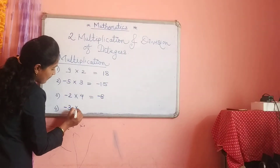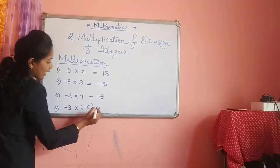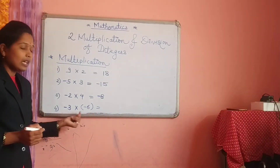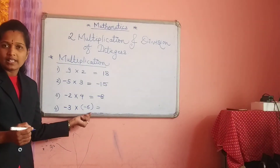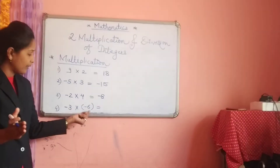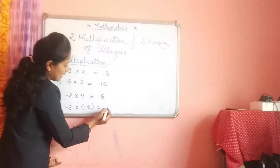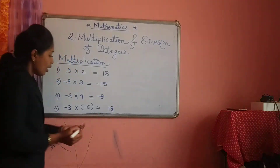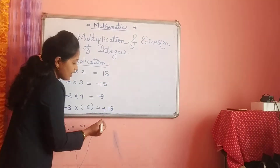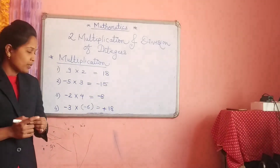And the last one: minus 3 multiplied by minus 6. Both numbers are negative. Do the multiplication first: 6 threes are 18. Both numbers are negative, so your answer is positive. Answer comes positive — plus 18.